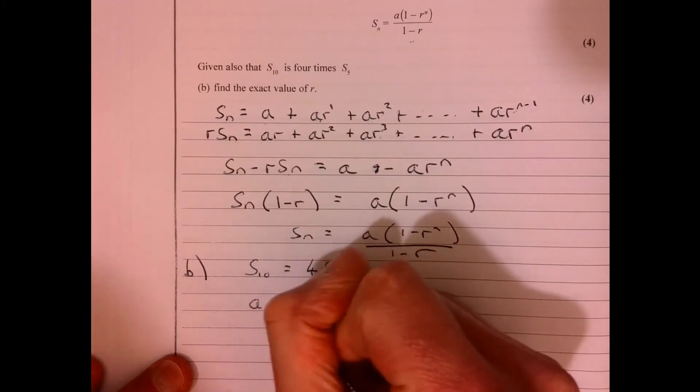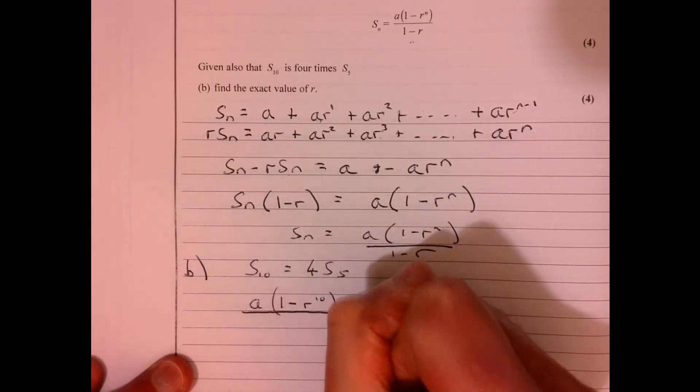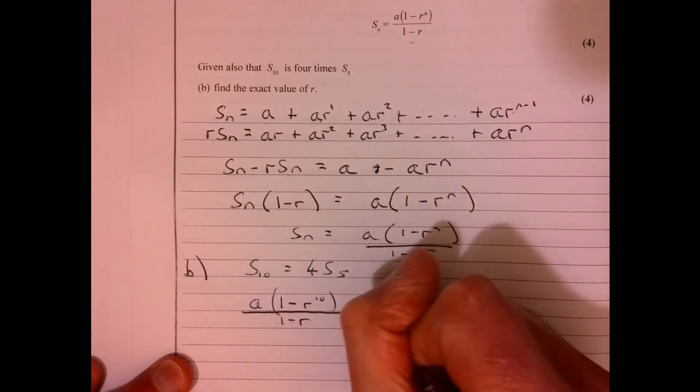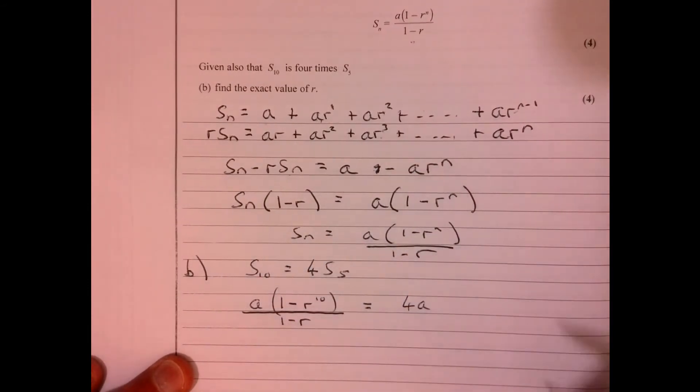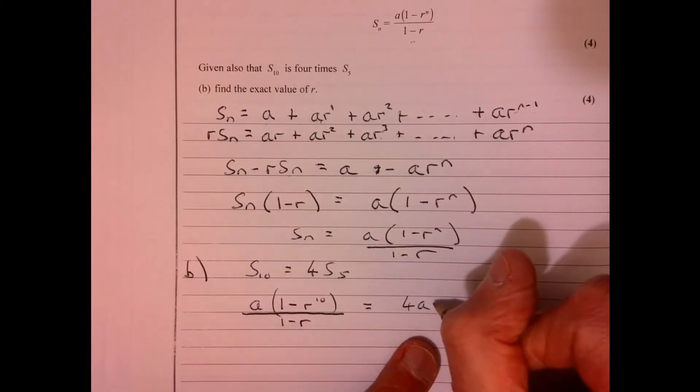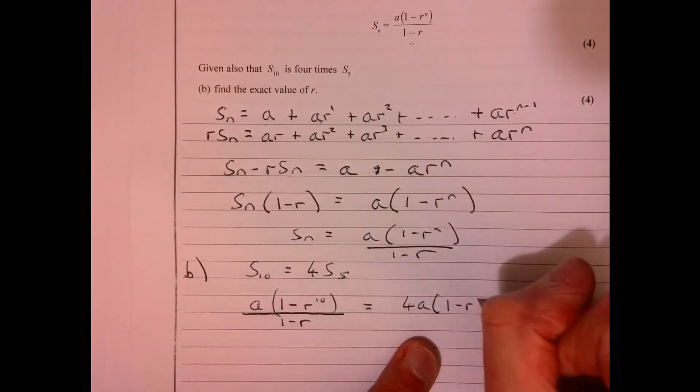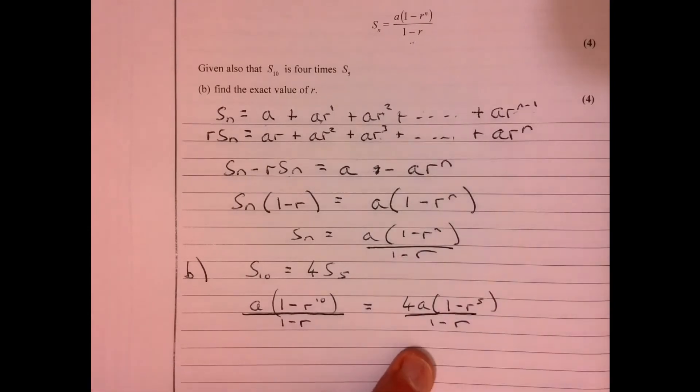So a, so that'd be 1 minus r to the 10. I thought it was quite a tricky question, this actually. Equals 4a, so it'd be 4 times, exactly the same thing, but r to the 5, 1 minus r.